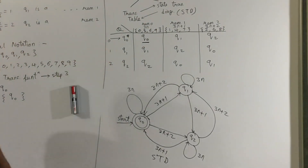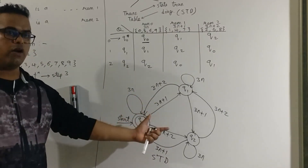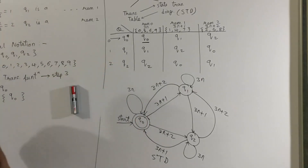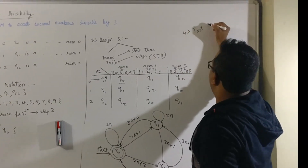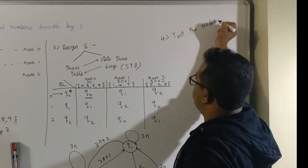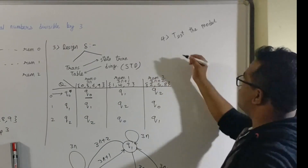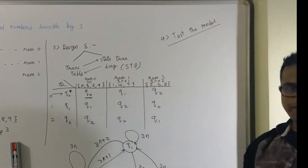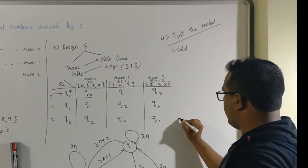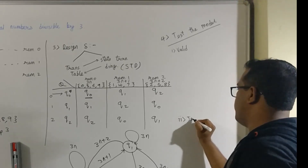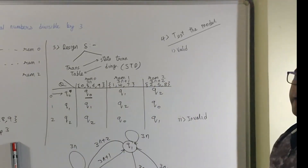My model is ready. This represents the behavioral model of the machine — how the automata is represented for this problem. Now my fourth step will be to test the model. Our model is ready but not yet tested, so we need to verify whether it works correctly. I am going to use two examples: one valid and one invalid.